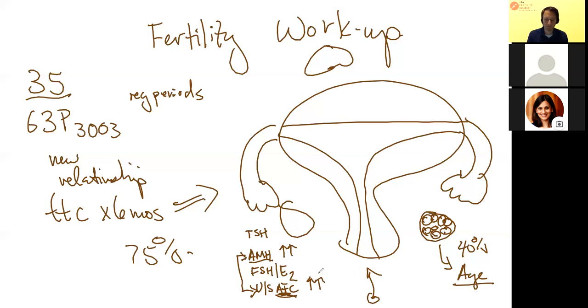The FSH estradiol test tells us how efficient the brain is communicating with the ovary. The brain sends a hormone called FSH to recruit eggs here in the ovaries. Ultimately one will be released that will make a lot of estrogen before it's released, and that estrogen level will feed back to the brain, cut the signal off, send another signal called LH, and that's how ovulation occurs.